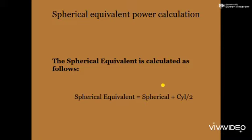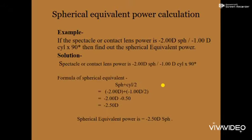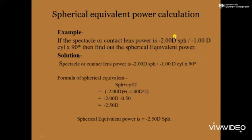Now let me discuss some examples. First example: if the spectacle or contact lens power is minus two diopter spherical / minus one diopter cylinder × 90°, find the spherical equivalent power. Using the formula — spherical plus half of the cylinder — the spherical value is minus two diopter and the cylinder value is minus one diopter. So: minus two diopter plus (minus one diopter divided by two) = minus two diopter plus minus 0.50 diopter. The final spherical equivalent power is minus 2.50 diopter.